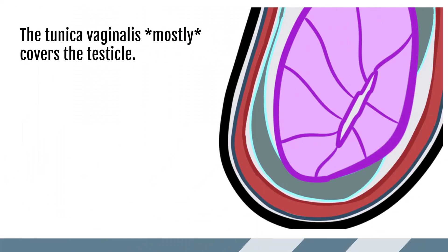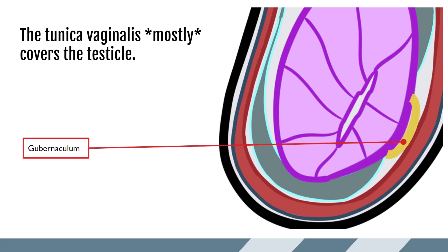The tunica vaginalis mostly covers the entire testicle. There is one area in contact with the posterior scrotal wall, connected by a ligament called the gubernaculum. The gubernaculum acts as an anchoring point for the testicle and draws the testes into the scrotum during development. There is a congenital variant in which the tunica vaginalis covers the entire testicle, and this is especially important when we talk about the causes of torsion or the twisting of a testicle.